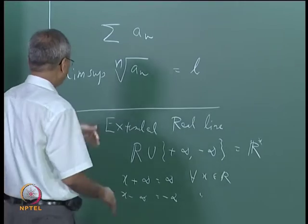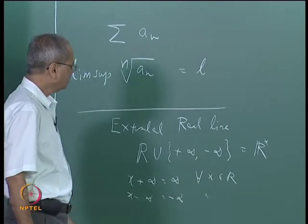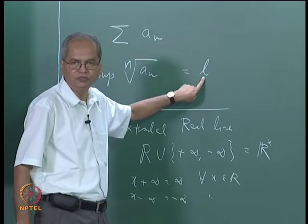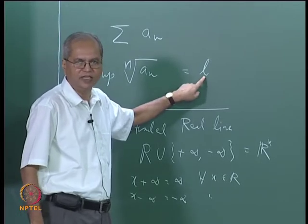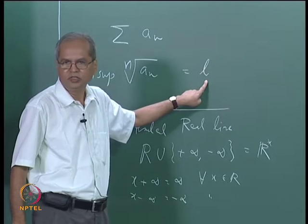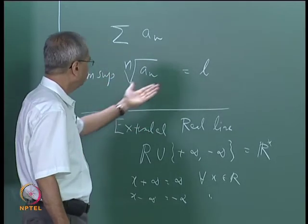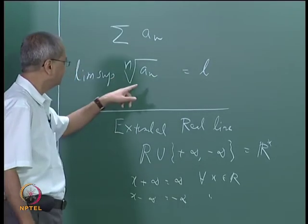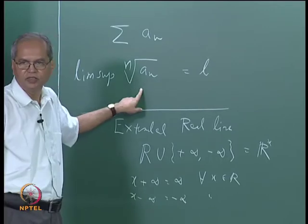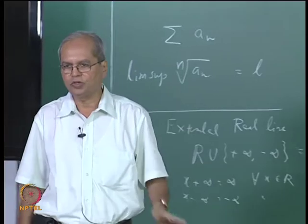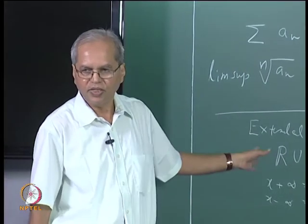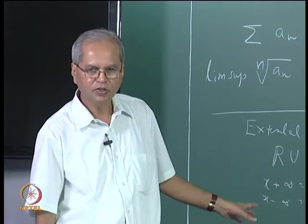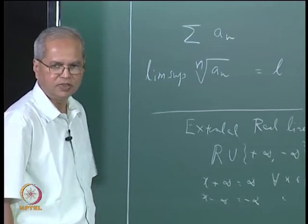The relevance to the root test is that this limit L can be infinity, which falls under the case L > 1. Looking at the definition of limit superior: we take αₖ as the supremum of aₙ for n ≥ k; the limit of that sequence can be infinity. So the limit superior of a sequence can be infinity, and the limit inferior can be minus infinity. These cases can all be included with this convention on the extended real line.